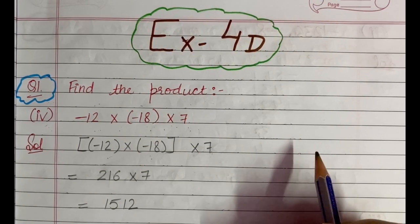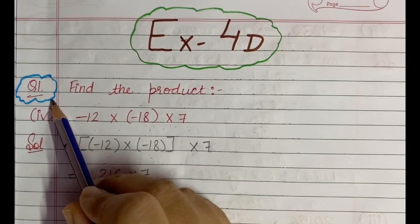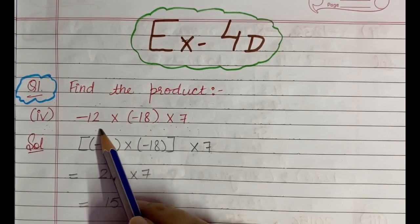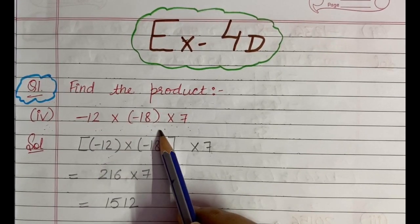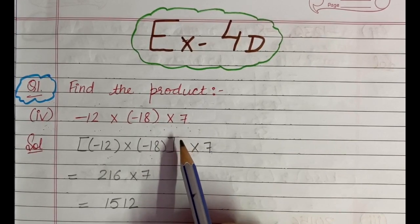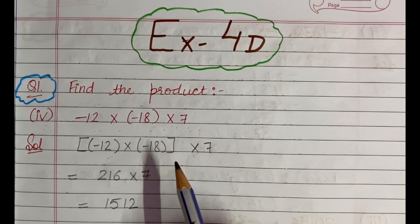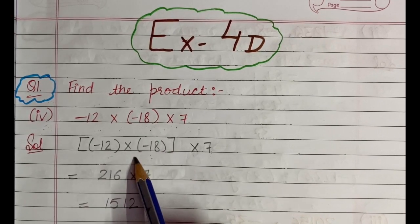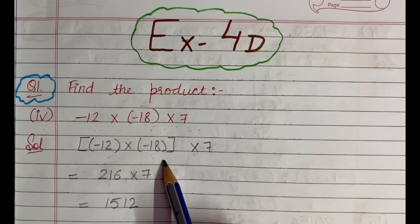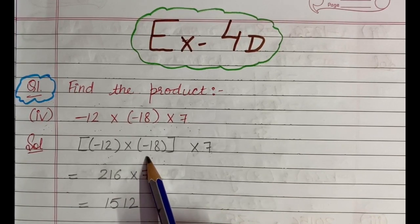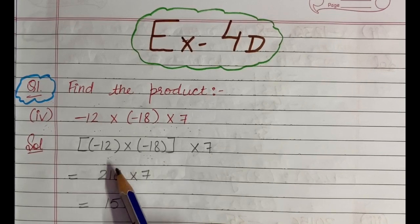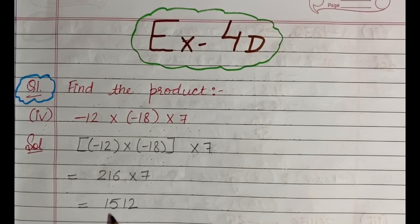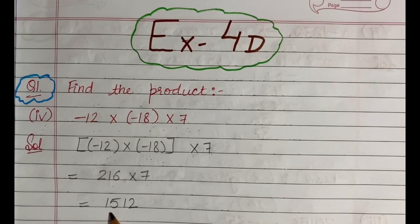I have taken question number 1, find the product, fourth part. The fourth part says: (-12) × (-18) × 7. Since there are 3 integers, we will take 2 integers in a bracket. I have taken (-12) × (-18). On solving this bracket, we will get 216. Then 216 × 7 will give us 1512 as the answer.